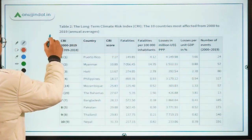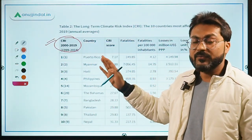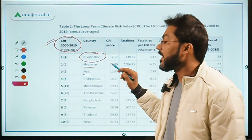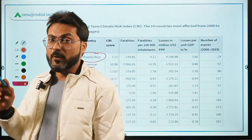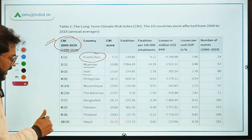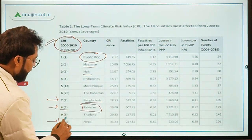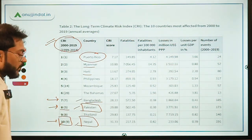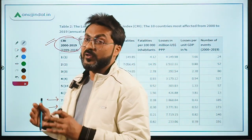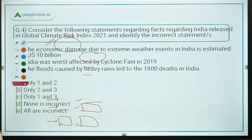Looking at the 20-year period from 2000 to 2019, the countries worst affected by climate change were: Puerto Rico at number one, followed by Myanmar and Haiti. Among India's neighbors, Bangladesh is at 7th, Pakistan at 8th, and Nepal at 10th position in terms of worst-affected countries over the last 20 years due to extreme weather events.